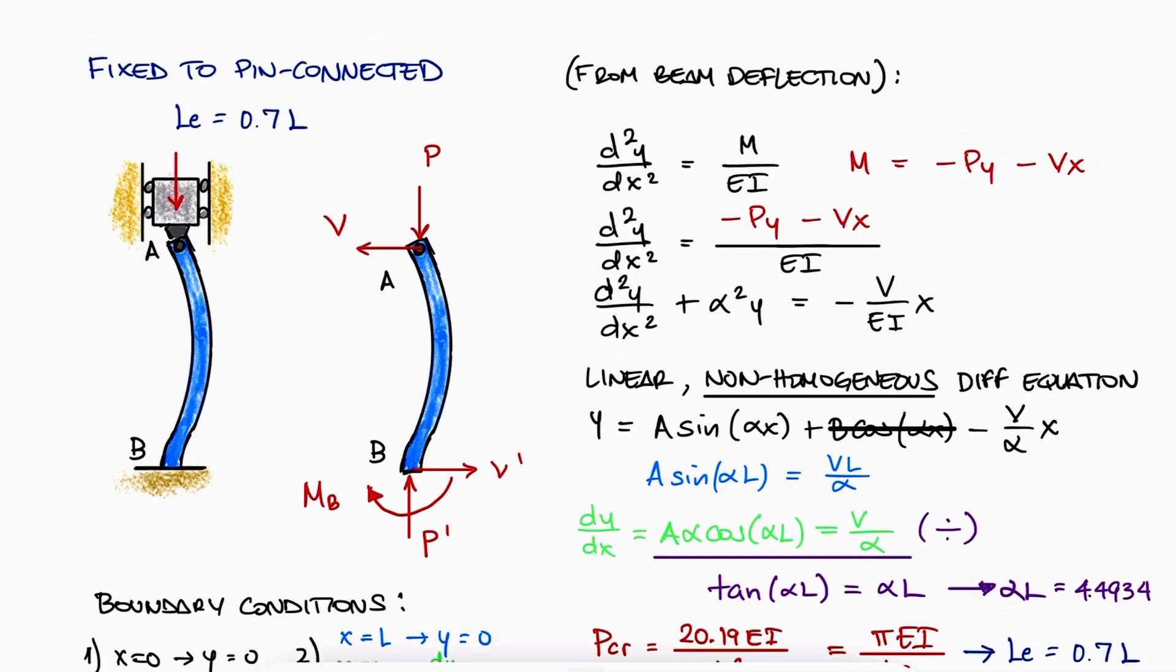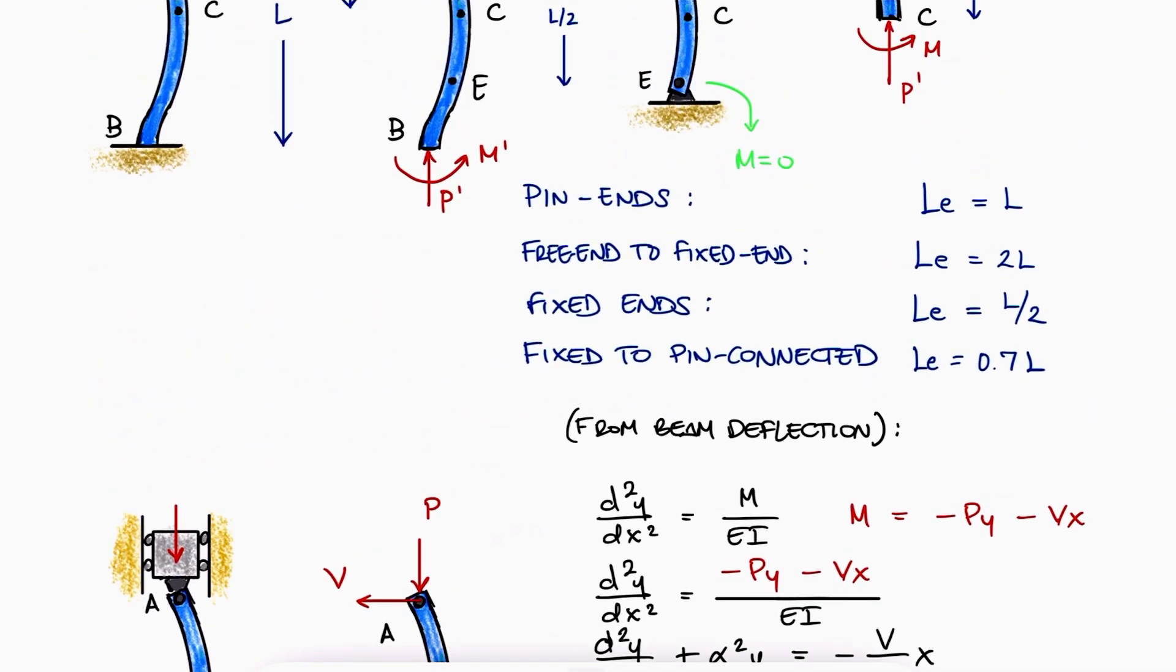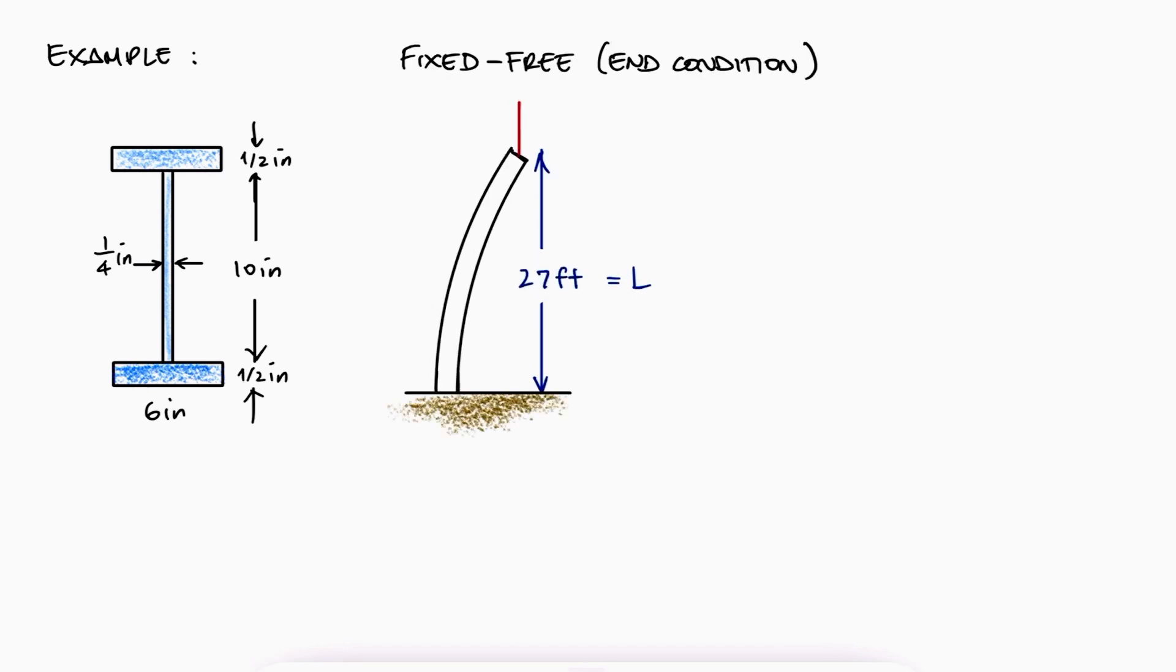With some of the most common end conditions now studied, let's look at a simple example of column buckling. A column with a cross section shown has a 27 foot length and is fixed at one end and free at the other.